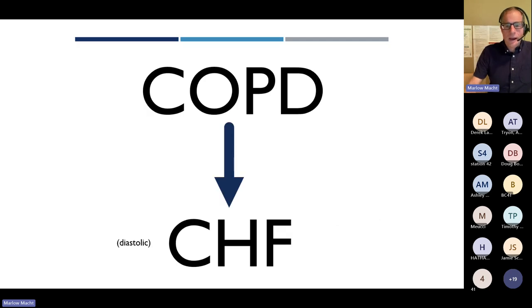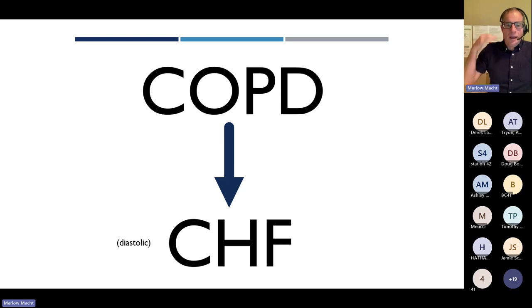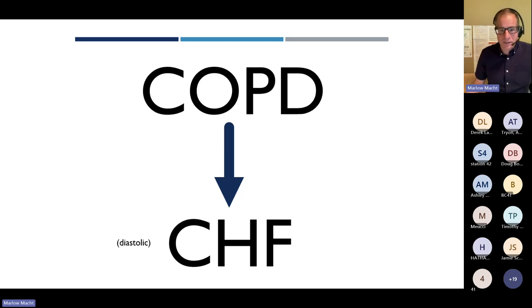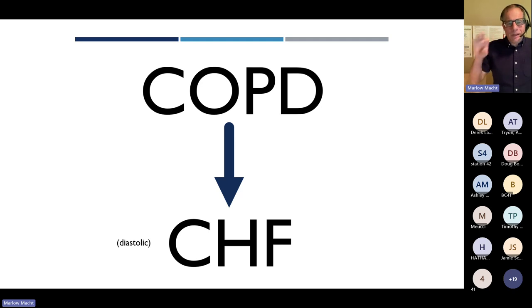Chronic bronchitis patients are often overweight, can have rhonchi, and can be difficult to distinguish from patients with pneumonia. They can also develop signs of CHF because the right side of the heart pushes against stiff lungs over years, ultimately developing diastolic heart failure. So if you see anyone who's had COPD for a prolonged period, they start on inhalers and ultimately need diuretics as well because they have a component of fluid overload.